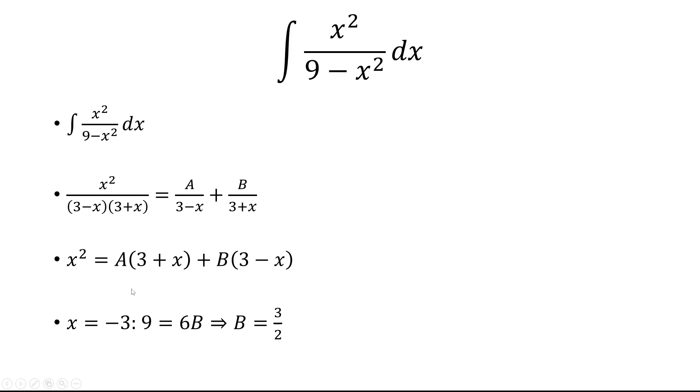Plugging in x = -3, this term cancels and we get 9 = 6B, which means B = 3/2.